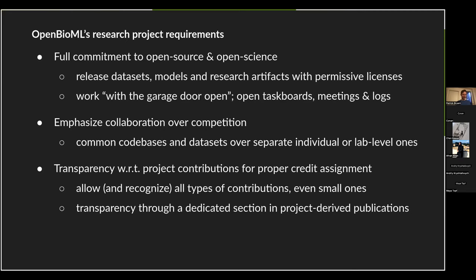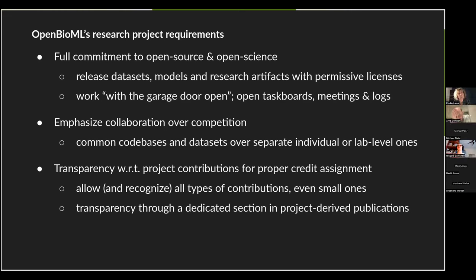We generally believe in collaboration and want to emphasize collaboration over competition. Community projects should ideally work on common code bases, datasets, and evaluation scripts rather than individual or lab-level ones. We believe in allowing all kinds of contributions, no matter how small. Community projects require transparency for credit assignment. Publications derived from community projects should include a dedicated section outlining each individual's contribution. In this way, we hope people will be encouraged to participate and contribute to research projects while still maintaining full transparency regarding which contributions matter most for project success.